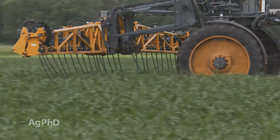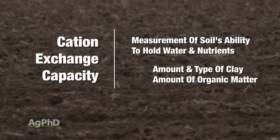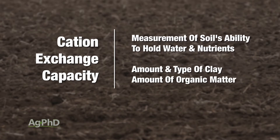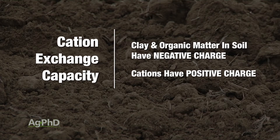Cation exchange capacity is a measurement of soil's ability to hold water and nutrients, and it's determined by the amount of clay, the type of clay, and the amount of organic matter that a soil contains. What it really amounts to is: soil is negatively charged, and cations are positively charged. So it's just a question of how many positively charged things can that soil hold?